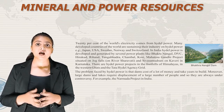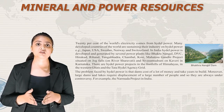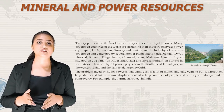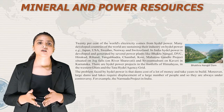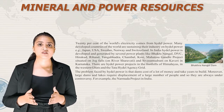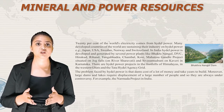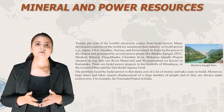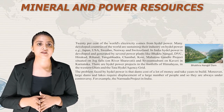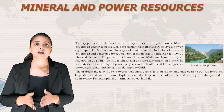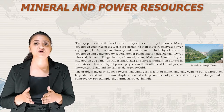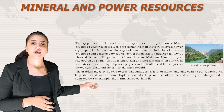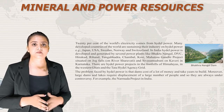In India, hydropower is developed and generated by several power plants like Bhakra Nangal, DVC, Hirakud, Rihand, Tungabhadra, Chambal, Kosi, the Mahatma Gandhi project on Jog Falls on River Sharavati, and Shivanasamudra on the Kaveri in Karnataka. There are also hydropower projects in the foothills of the Himalayas, the Western Ghats and the Tata Hydel Agency grid. Here is an image of Bhakra Nangal Dam.